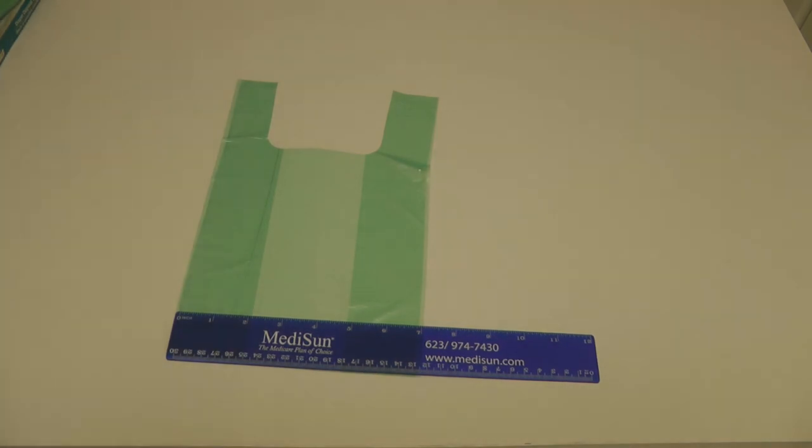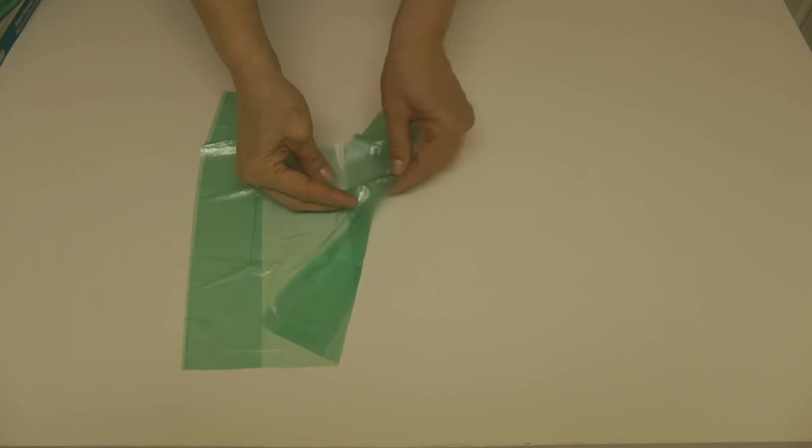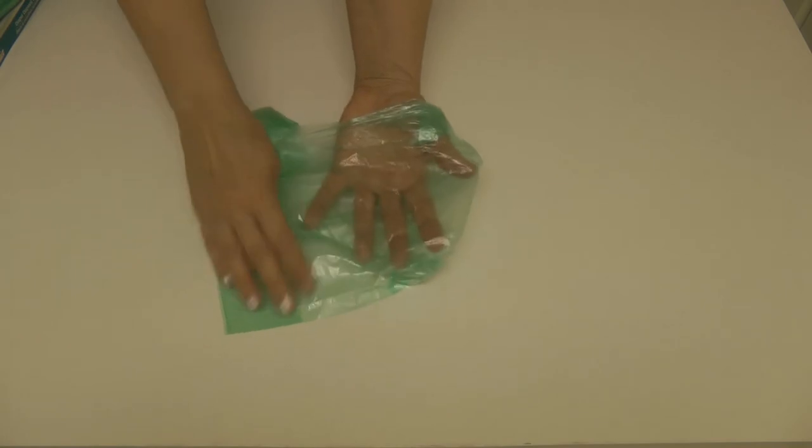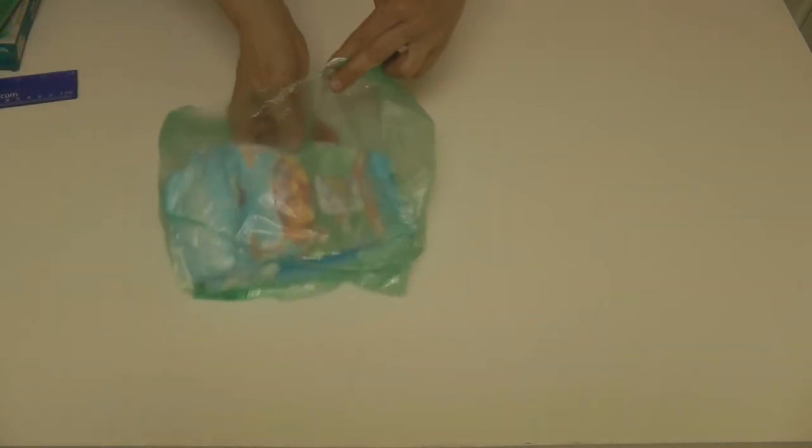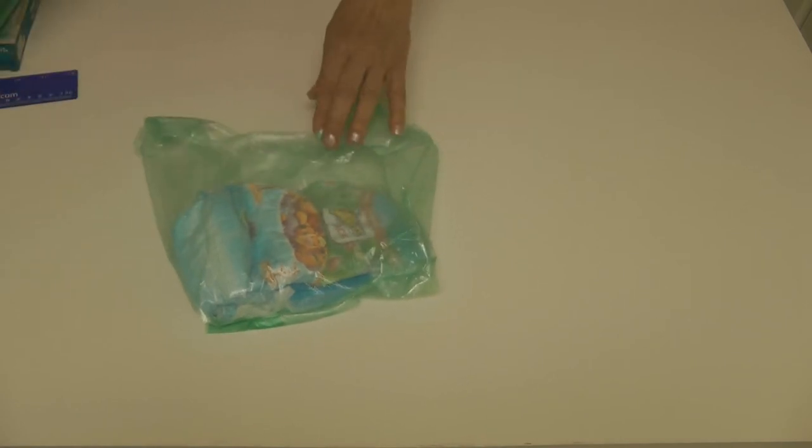But if you notice, the sides are gusseted, which means they're going to poof out on both sides, and then you have a full 10-inch wide bag. I have two little diapers here and you can see they'll both fit easily inside.